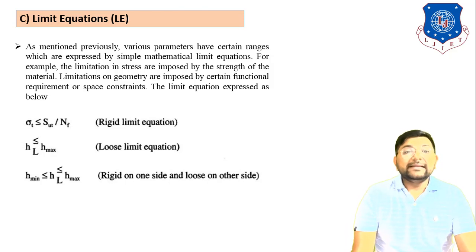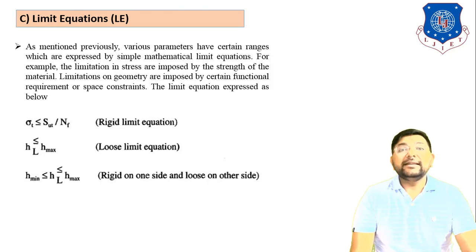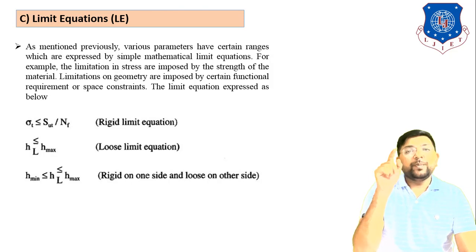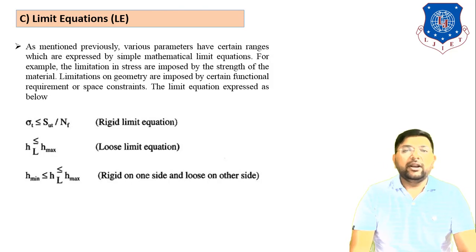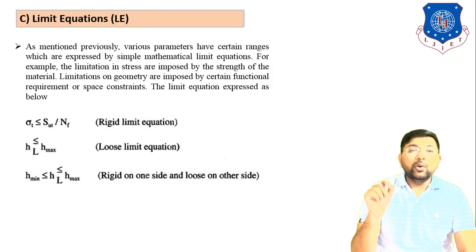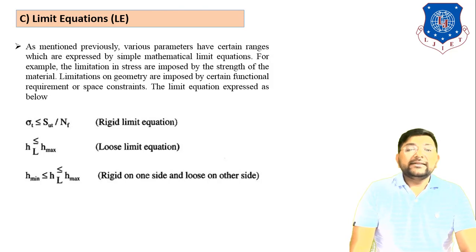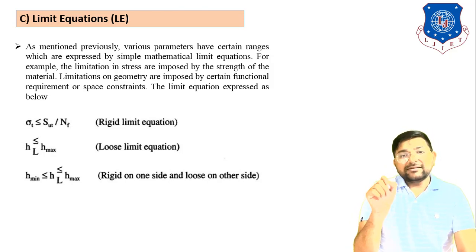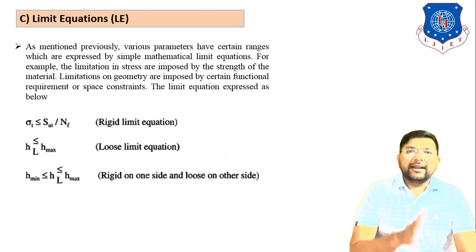This equation, σ_T ≤ S_ut / N_F, is the Rigid Limit Equation. The Loose Limit Equation is: H ≤ H_max, where H indicates the loose side. The combined Rigid and Loose Limit Equation is: H_min ≤ H ≤ H_max, where one side is loose and the other is rigid. So there are three equations in total: PDE, SDE, and LE.